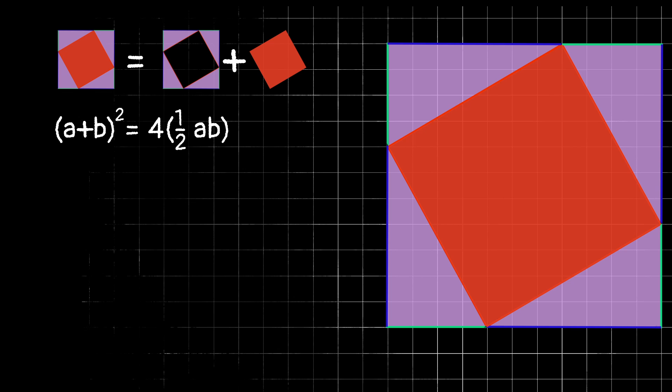Then adding in the area of the center square, that would simply be plus c squared. So, we have this statement that is true. We have the total area of everything equals the sum of the area of the parts that it's made of.